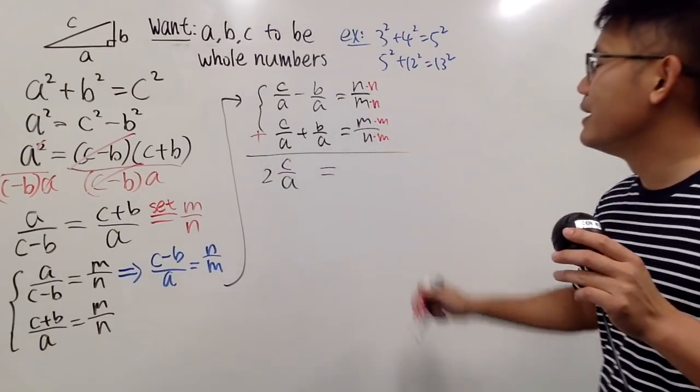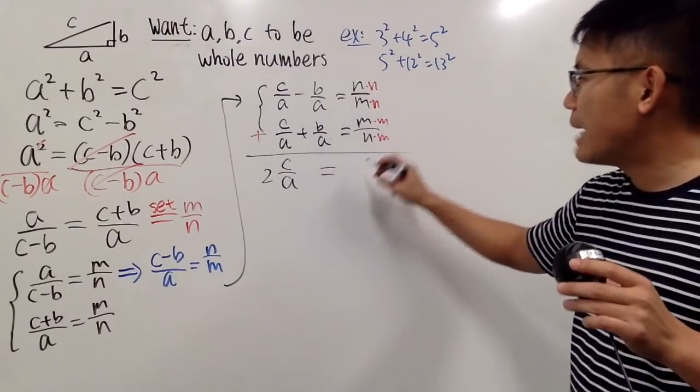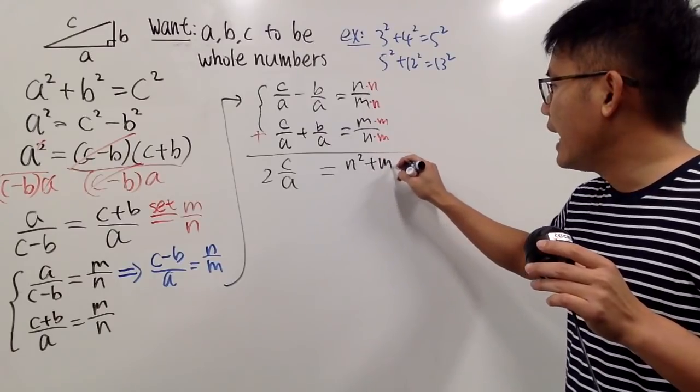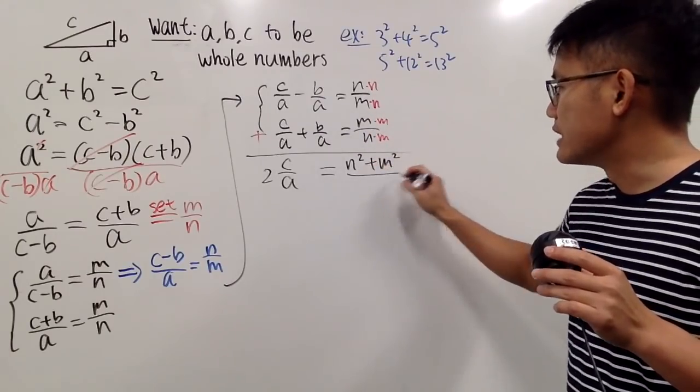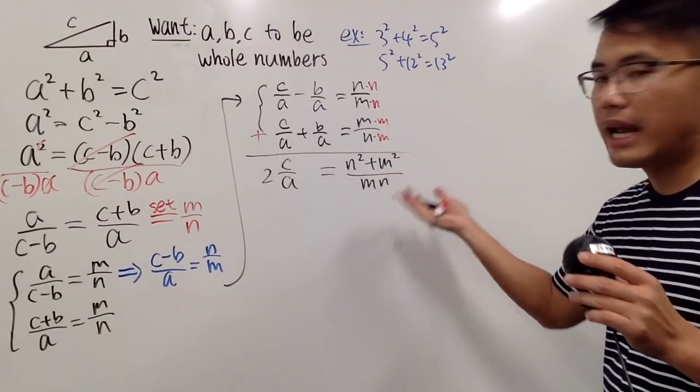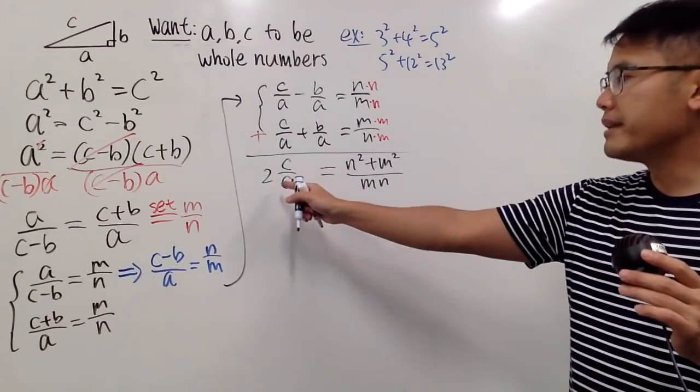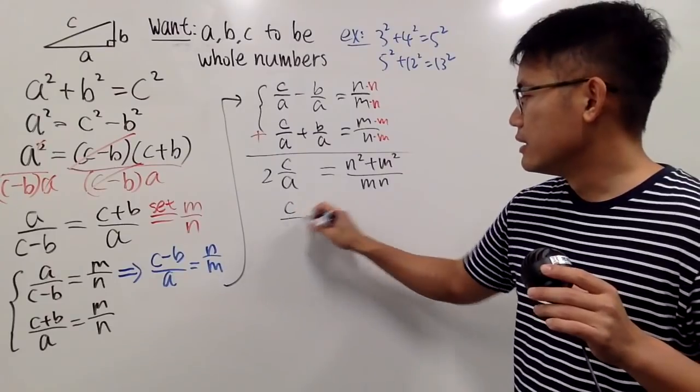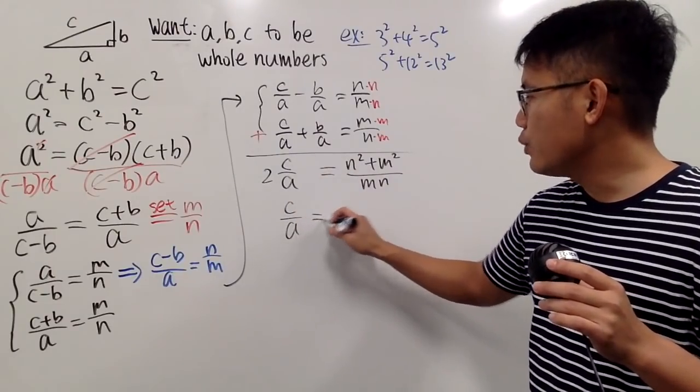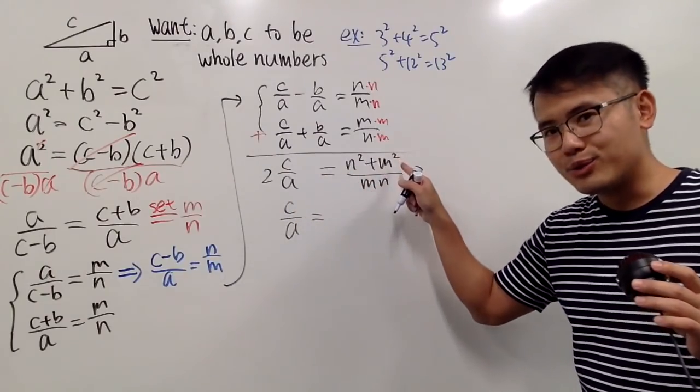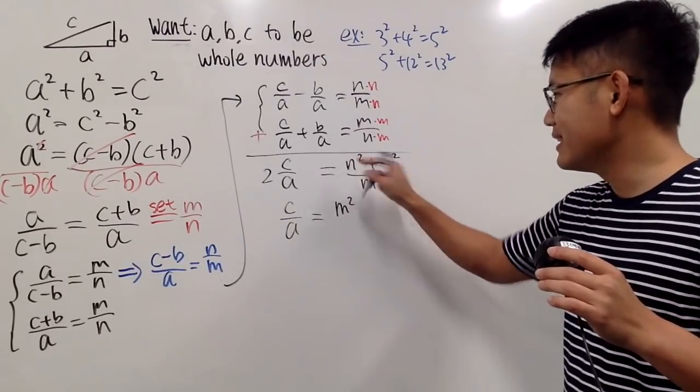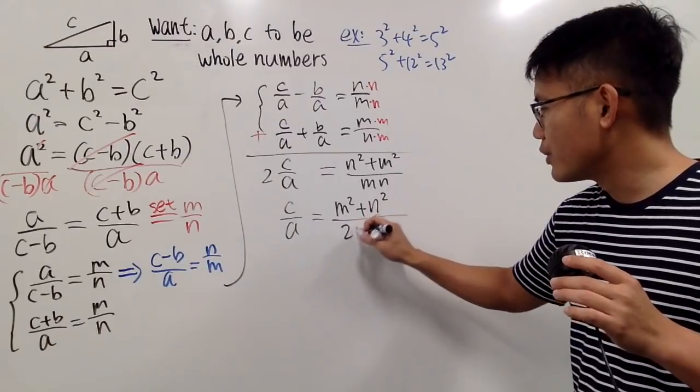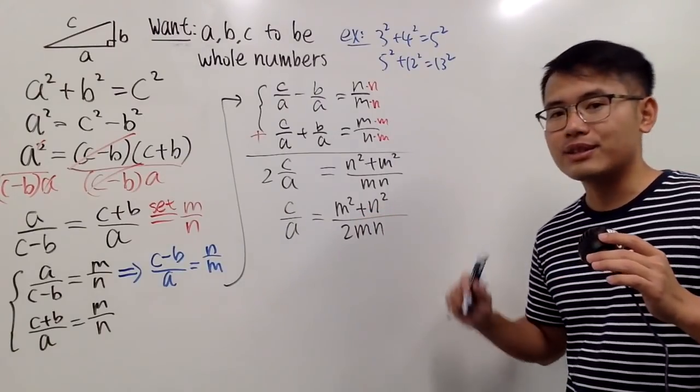M here. So when you add them up, on the top, I get N squared plus M squared and then over the same denominator, which is MN. And I want to make this slightly cleaner so I can just divide both sides by two, right? So C over A equals to, allow me to write the M squared first. M squared and then plus N squared, and then two right here. Two MN. Just like that.